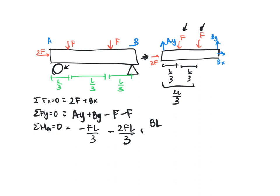And again, we're going to do some simple math. We're going to find that Bx is equal to negative 2F. We're going to find that By is going to be equal to F. And we're going to find that Ay is equal to F. And those will be our final answers.